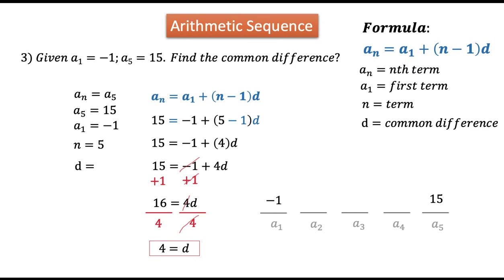To verify, let us check if negative 1 connects to 15 by adding 4 each time: negative 1 plus 4 is 3, plus 4 is 7, plus 4 is 11, plus 4 is 15. So the common difference is confirmed to be 4.